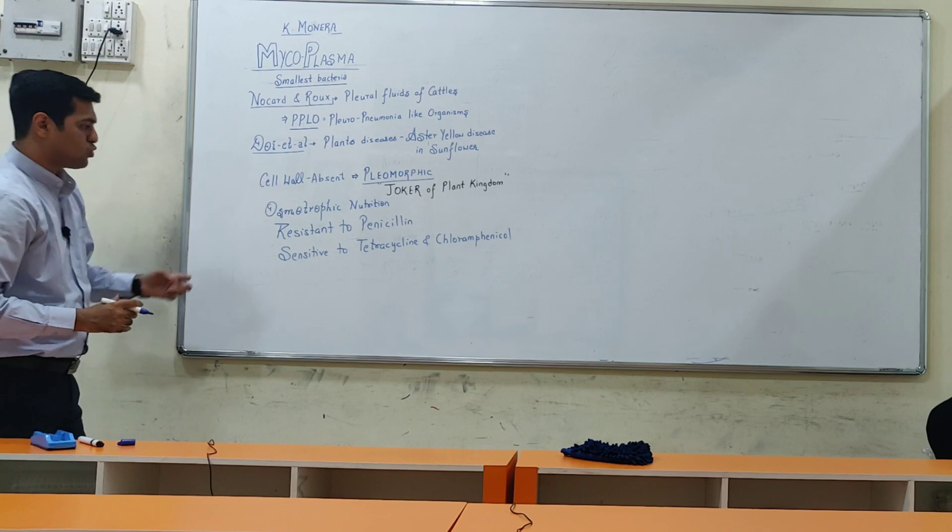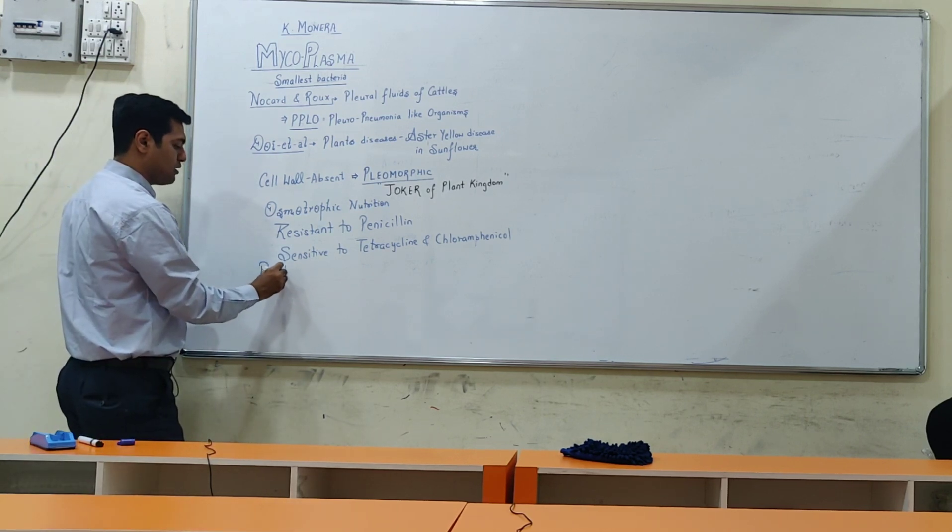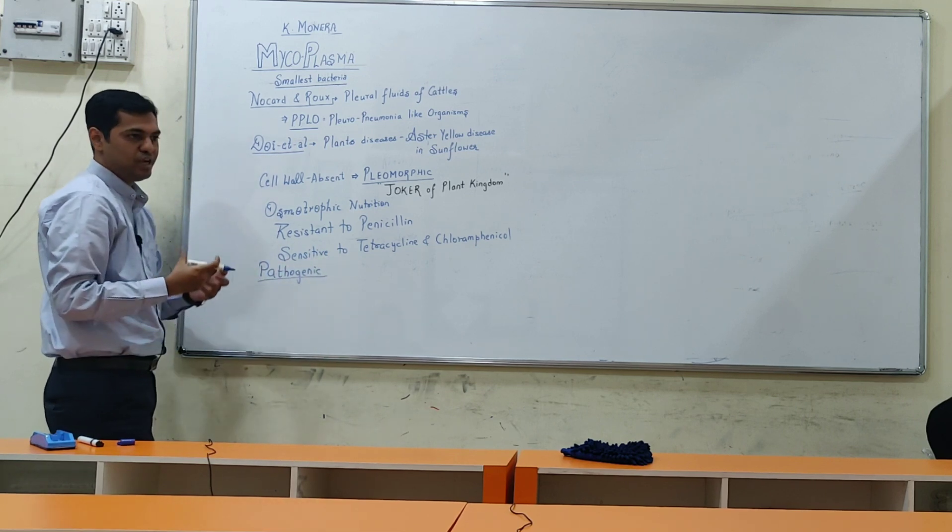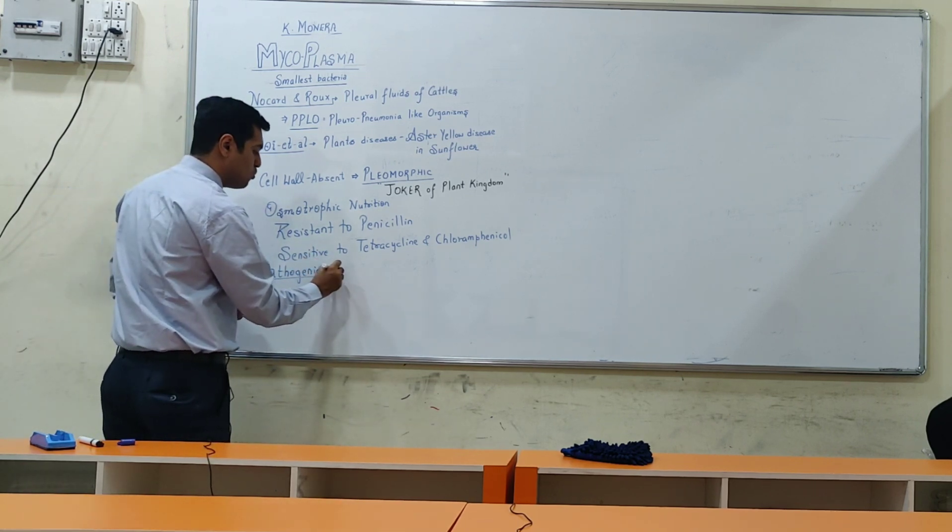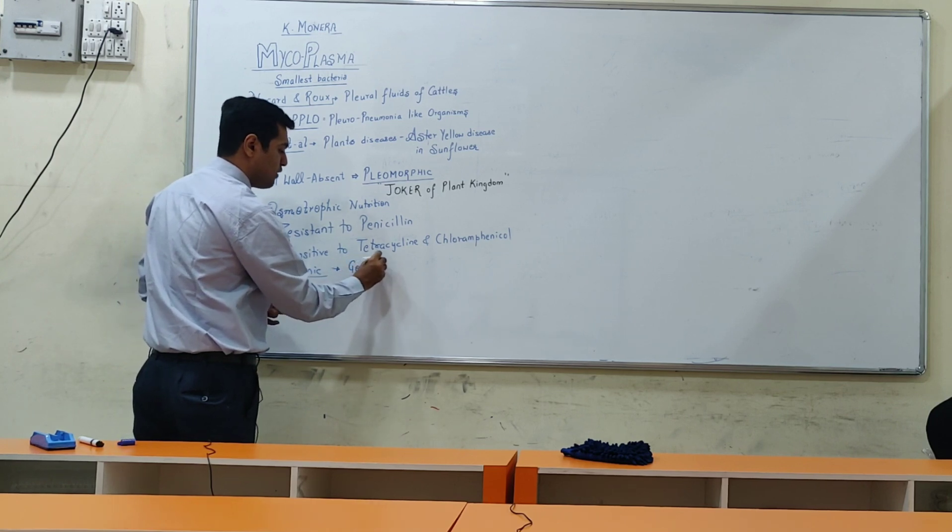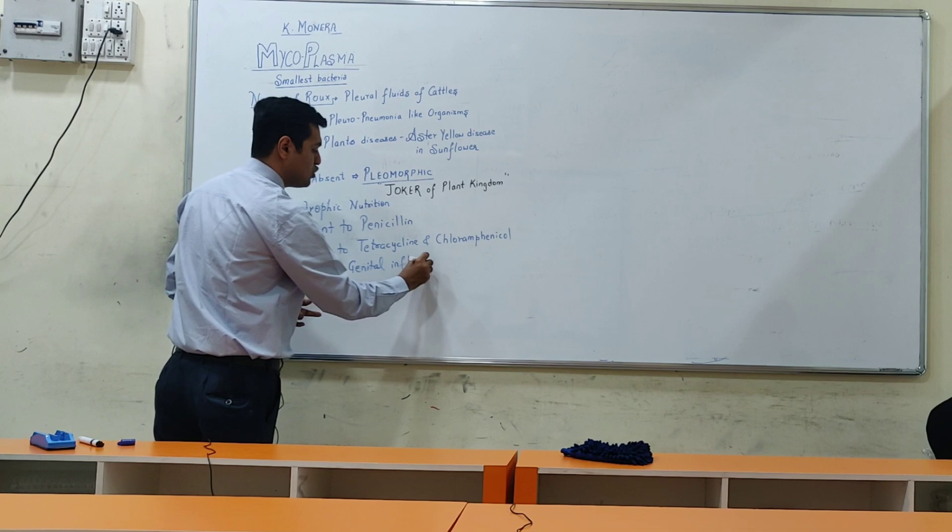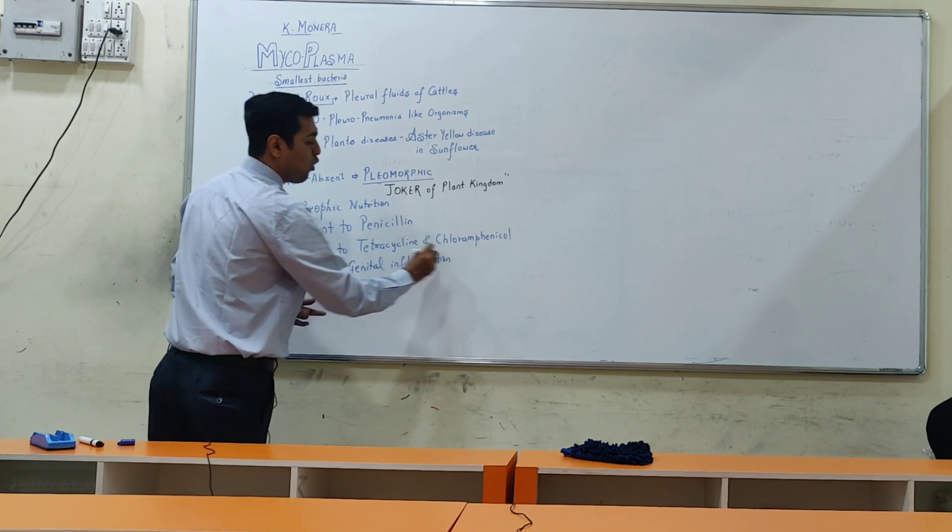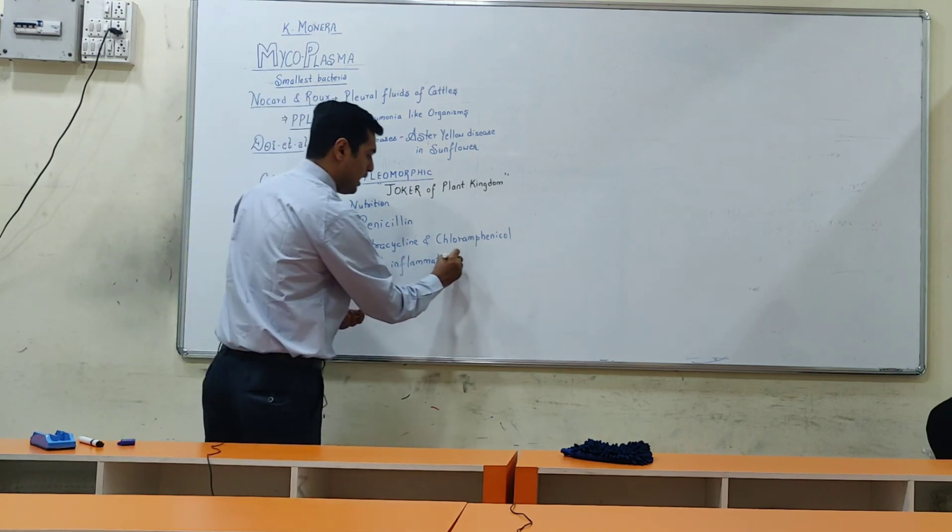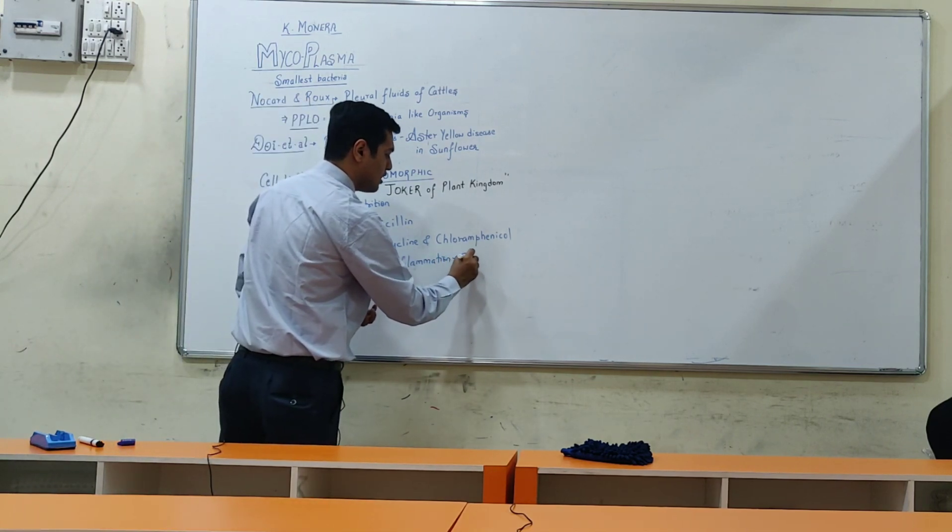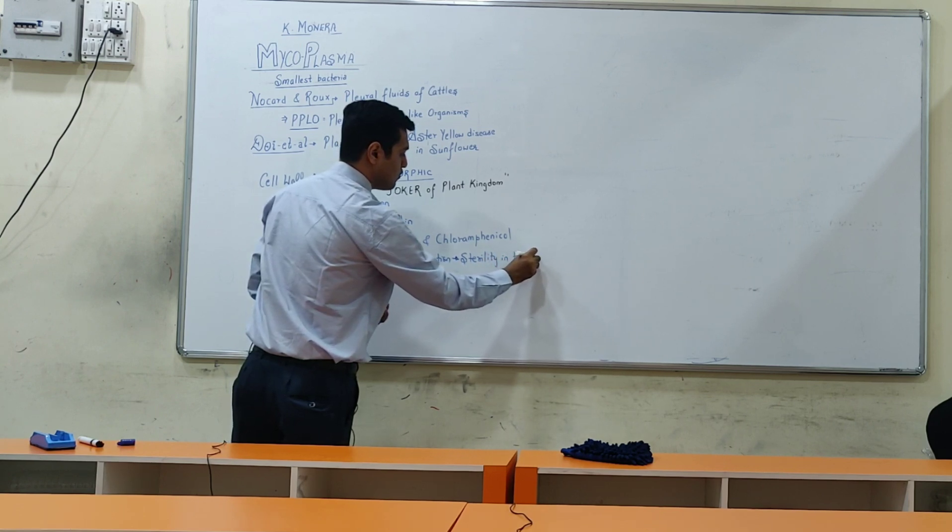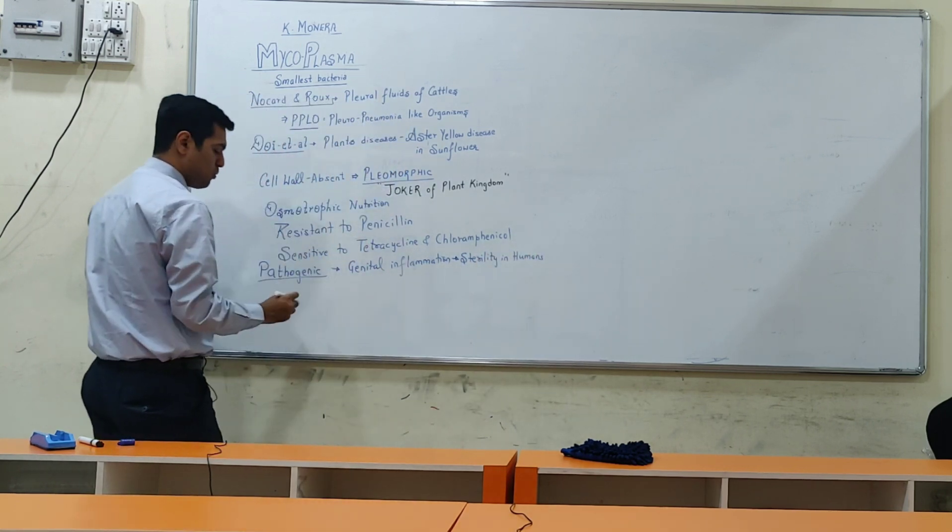Now, Mycoplasma are usually pathogenic in nature, meaning they are disease-causing. In humans, it can cause genital inflammation, that is damage to the reproductive organs. Mycoplasma is a highly infectious organism which can result in sterility in humans.